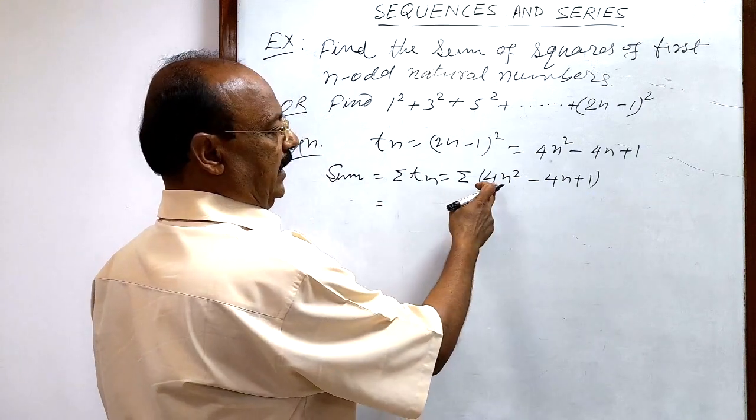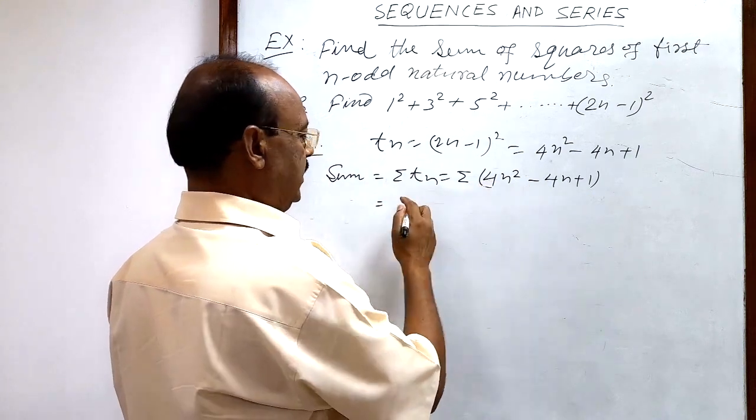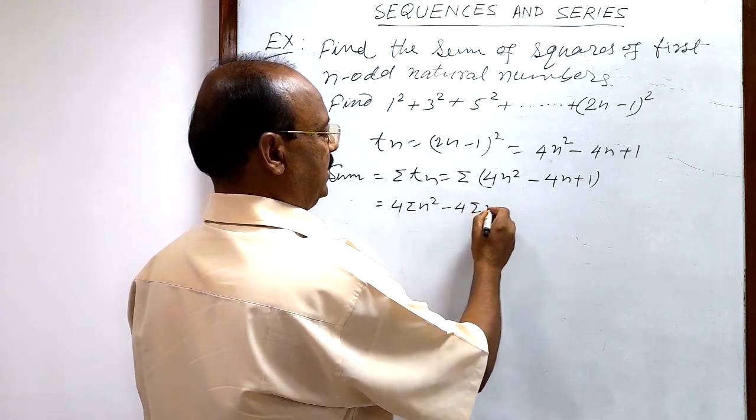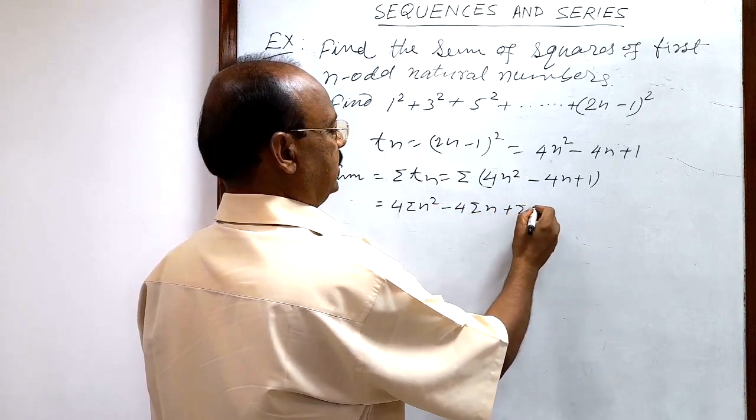This is equal to, and this coefficient will be taken outside the sigma. So, 4 × Σn² - 4 × Σn + Σ1.